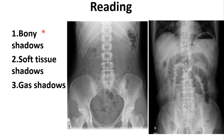Now we discuss the reading of a plain X-ray of the abdomen. The first thing we look for is the bony shadows — the bones visible in the X-ray. The lower ribs are visible; this is the last rib, the 12th rib, then the 11th, 10th, 9th, and so on. After the ribs, identify the vertebrae, and decide the number and type. Since ribs articulate with thoracic vertebrae, the 12th rib articulates with the 12th thoracic vertebra.